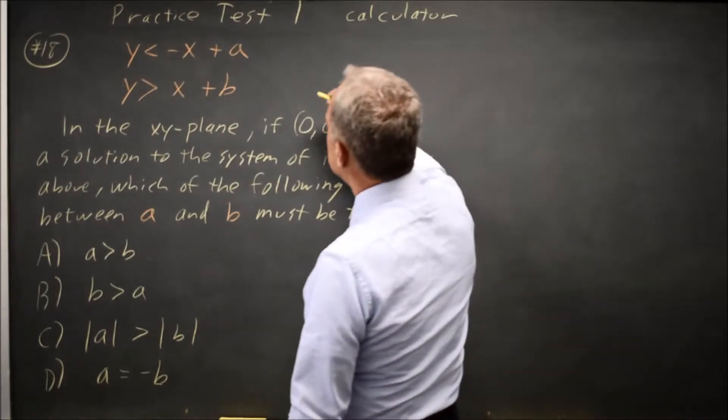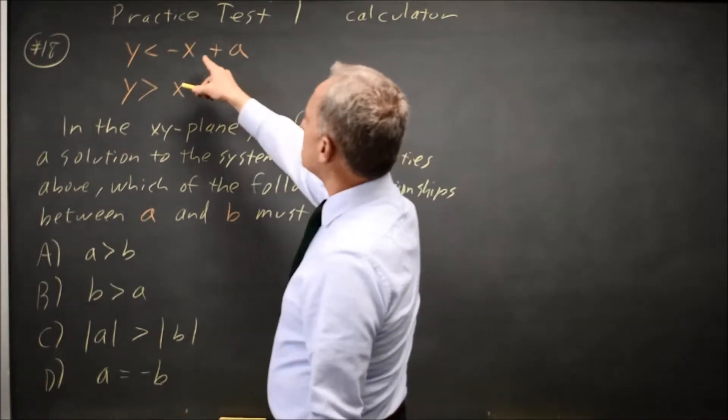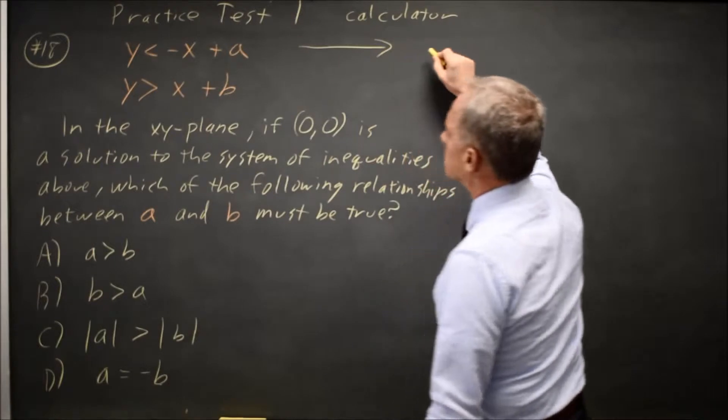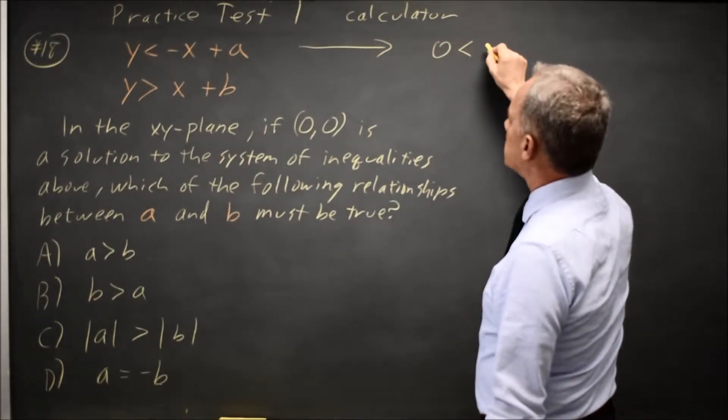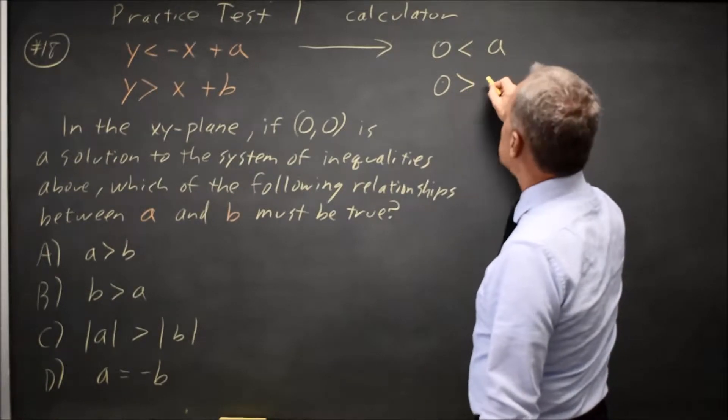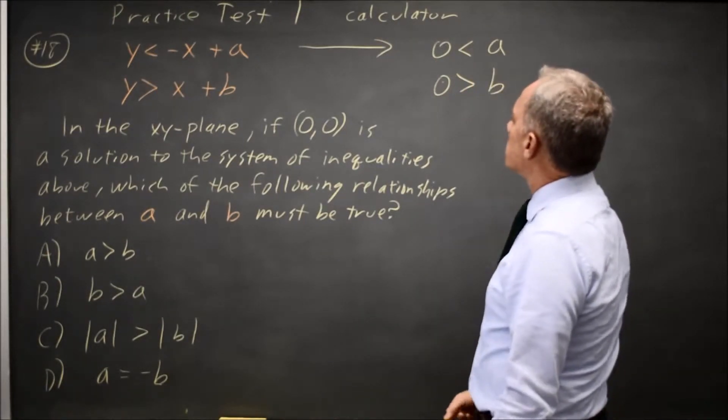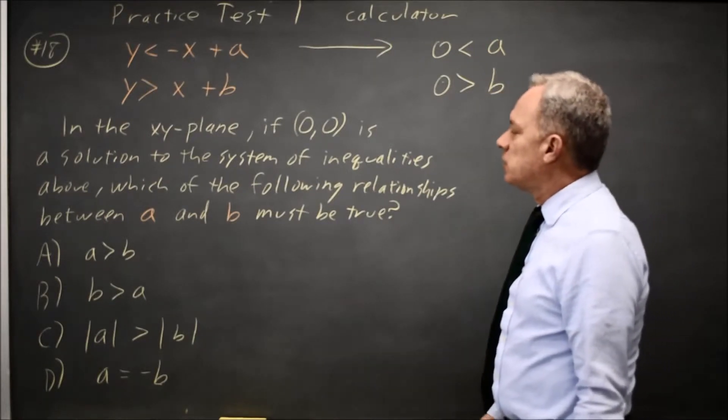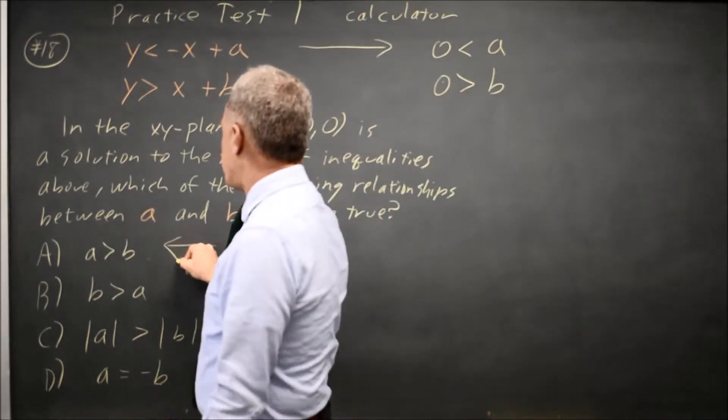One way to solve this is to substitute in x equals 0, y equals 0 into each inequality. The first one gives us 0 less than 0 plus A, so 0 less than A. The second one gives us 0 greater than 0 plus B, so 0 is greater than B. So A must be positive and B must be negative, which tells us that A must be greater than B.